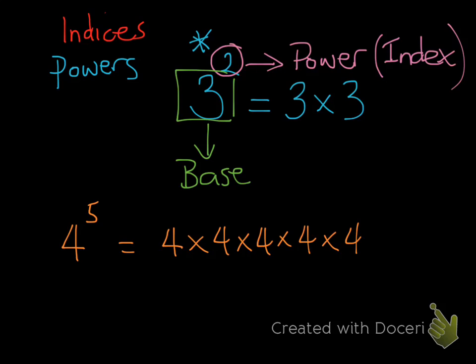The only other thing I want to talk about is indices where the base number is not a numerical value — for instance, if we had an index where the base number was a pronumeral or a variable. So if we take the value x and put it to a power of 3, this power or index operates in exactly the same way, but the base number is now a variable, not a numerical value. That little 3 tells us how many times we multiply x by itself.